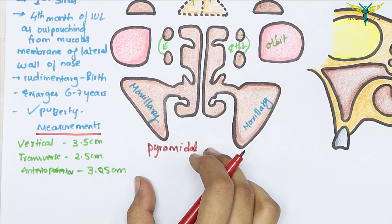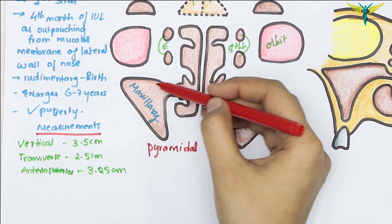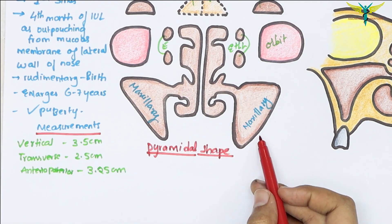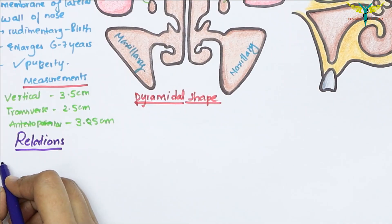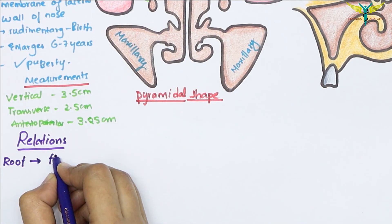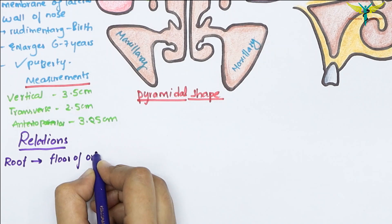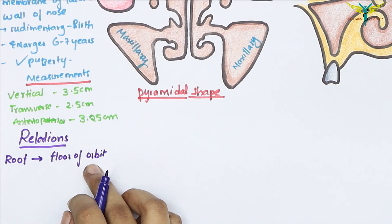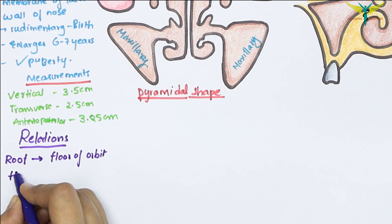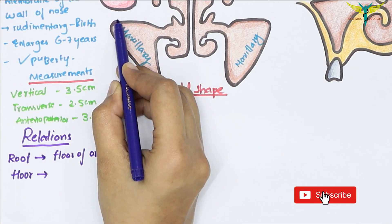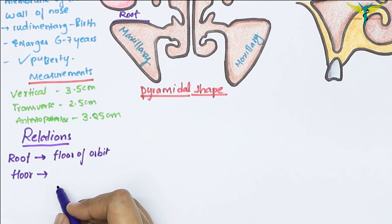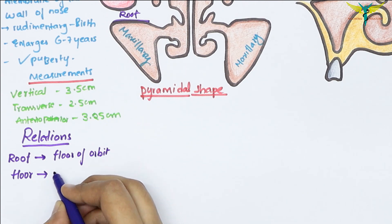The pyramidal shape has its base directed medially towards the lateral wall of the nose. Now let's talk about the relations of the maxillary air sinus. The roof is formed by the floor of the orbit, and the infraorbital nerve and artery traverse the roof in a bony canal. The floor is formed by the alveolar process of the maxilla.